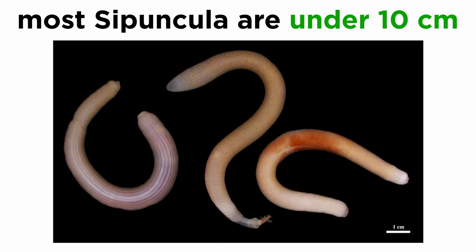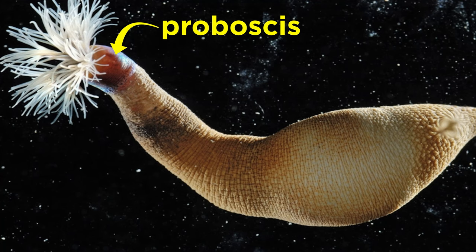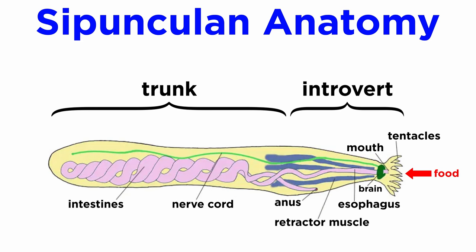They are relatively small animals, most of which are under 10 centimeters. When feeding, they extend their retractable proboscis, which is surrounded by a crown of mucus-covered ciliated tentacles, and feed on passing food particles or detritus. Captured food is moved into the mouth, through the esophagus, and into the intestine for digestion. Indigestible bits are expelled through the anus.